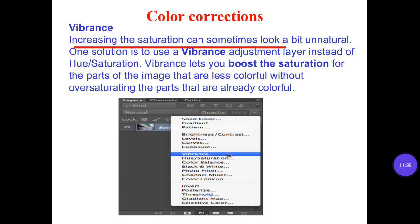Vibrance: Increasing saturation can sometimes look a bit unnatural. One solution is to use a Vibrance adjustment layer instead of Hue/Saturation. Vibrance lets you boost the saturation for the parts of the image that are less colorful without over-saturating the parts that are already colorful.